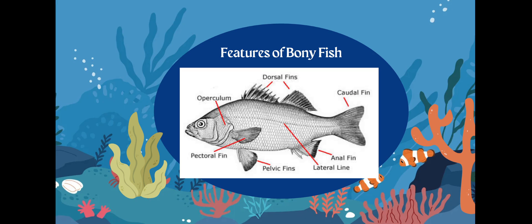The lateral line is found on bony fish and we can actually see it externally. The operculum actually covers the gills of a bony fish. If you ever look at fish and see their little flaps going in and out near their eyes, that's not fins — it's called the operculum and it opens and closes. We'll talk about why the operculum is opening and closing.